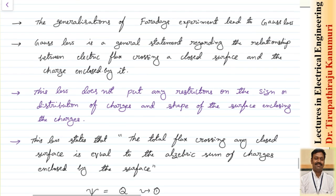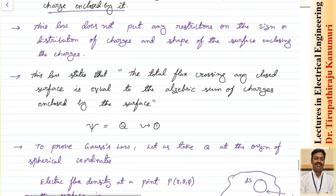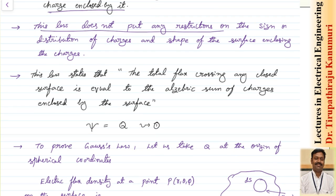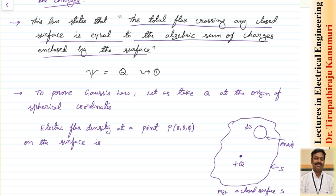Based on this, Faraday concluded his experimentation and gave the definition of Gauss's law. Gauss's law is a general statement regarding the relationship between electrical flux crossing a closed surface and the charge enclosed by it. This law does not put any restrictions on the sign or distribution of the charges, or on the shape of the enclosing surface. The statement is: the total flux crossing any closed surface is equal to the algebraic sum of the charges enclosed by the surface, or flux ψ equals charge enclosed Q.